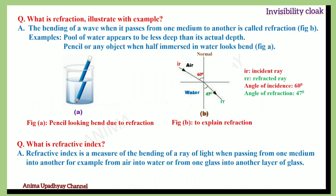Metamaterials don't allow reflection — they refract the light. What is refraction? The bending of a wave when it passes from one medium to another is called refraction. Examples include a pool of water which appears to be less deep than its actual depth due to refraction, and a pencil that looks bent when half-immersed in water. Figure B explains refraction of light, where the incident ray changes its path when passing from one medium to another — this is the refracted ray.